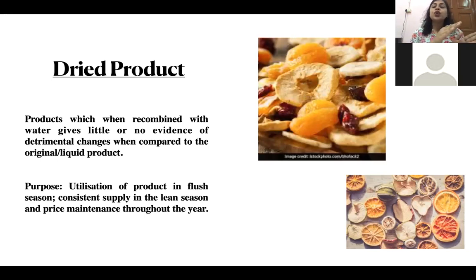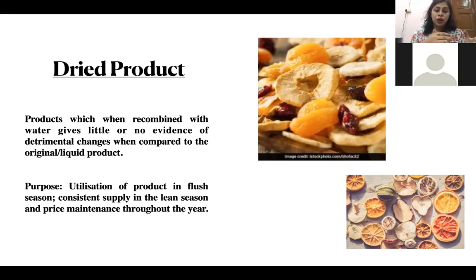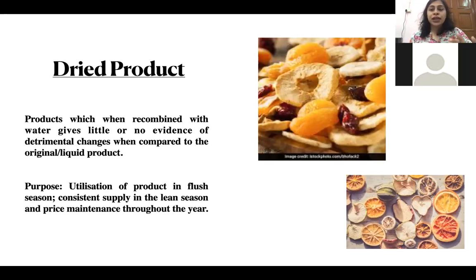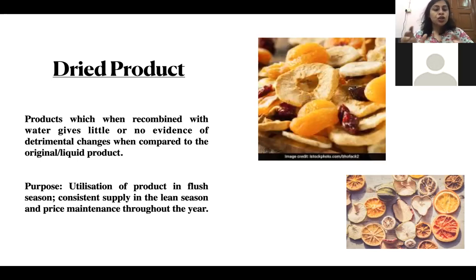In order to decrease the fluctuation in price and availability, what we do is: when there is excessive production, we store that product by drying it. When it's the lean period, we convert that dried product back into a normal liquid product and sell it, so that there is price maintenance throughout the year. The first purpose is utilization of the product in the flush season, and consistent supply in the lean season, so the product is utilized properly and the price is maintained.